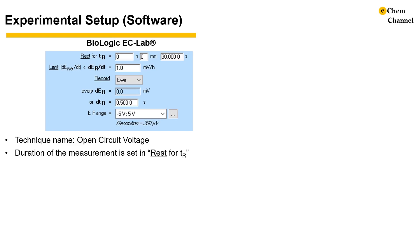The duration of the measurement is set in rest for TR, and you can set the target time resolution in dE/R and dT/R. The former will record data when every certain millivolt is changed, and the latter will record data every certain seconds. If you set up both, the software will record whichever criteria are met first.